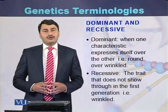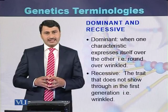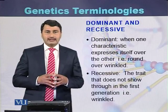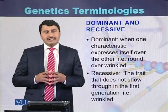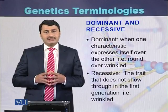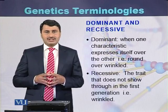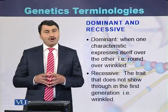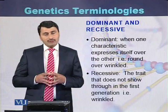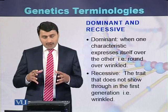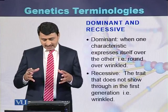What is the meaning of dominant and recessive? During a cross, when one trait expresses itself over the other, that trait is called dominant. While the trait which is masked by the other trait is called a recessive trait. For example, round is dominant over wrinkle — so round is the dominant trait while wrinkled seed is the recessive trait.